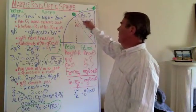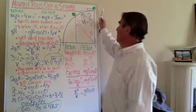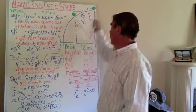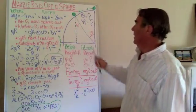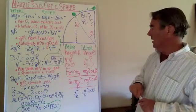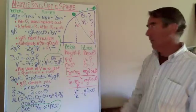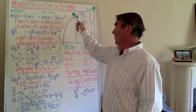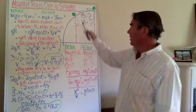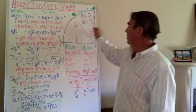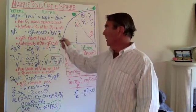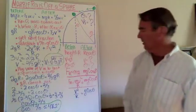So if a marble starts rolling off the top of a frictionless sphere, it will eventually move fast enough to separate from the sphere. At that point it will be moving at a velocity equal to the square root of two-thirds times gravity times the radius of the sphere, and it will be at an angle of about 48 degrees off vertical. The keys to solving this problem are to recognize two different expressions for the centripetal force — mv²/r and mg·cosθ — and to solve for velocity first, then plug it back into an earlier expression to solve for theta.